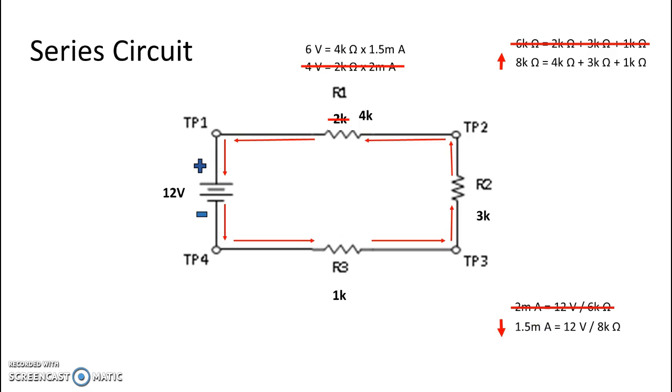Now our new resistive value of 4k ohms multiplied by 1.5 milliamps gives us a new voltage of 6 volts. So we see that the voltage drop of R1 has increased along with its resistive value.